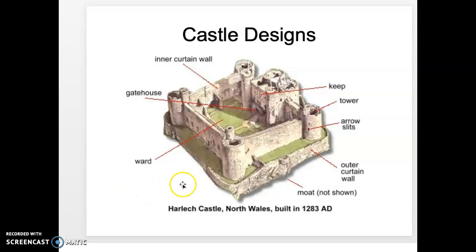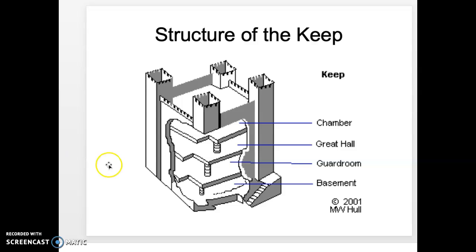Here is a diagram of a basic medieval castle design. You have the keep, which is the large central building, with four towers surrounding it, the inner wall as well as the outer wall. The keep had four layers: the basement was the lowest layer; the guard room where patrollers would protect the ruler; the great hall for entertainment and dining; and the top layer, the chamber, which was the bedroom for the king, queen, or ruler of the castle.